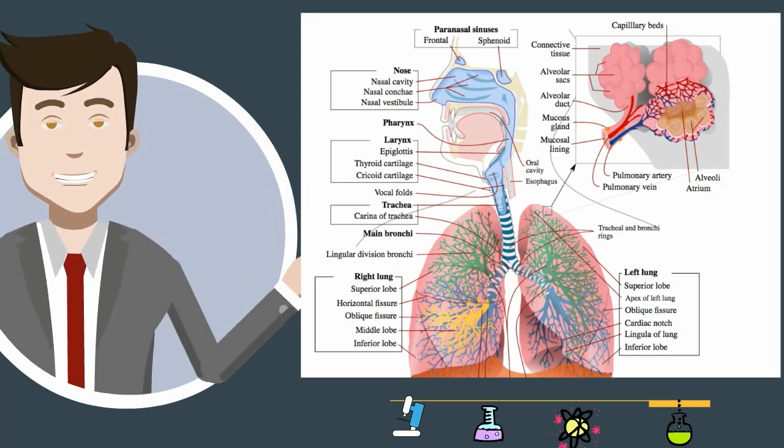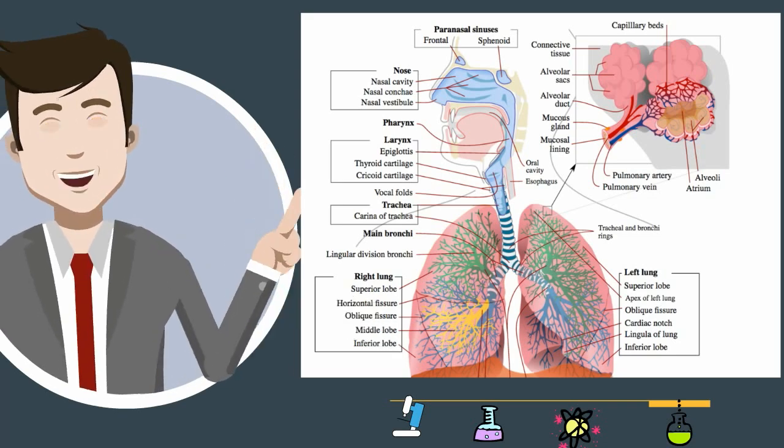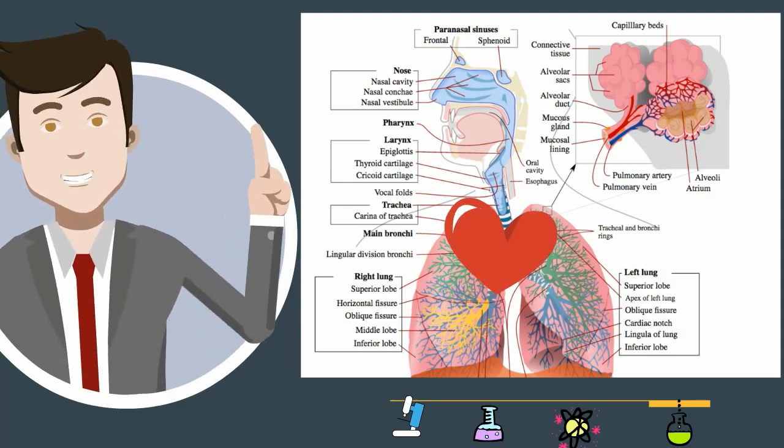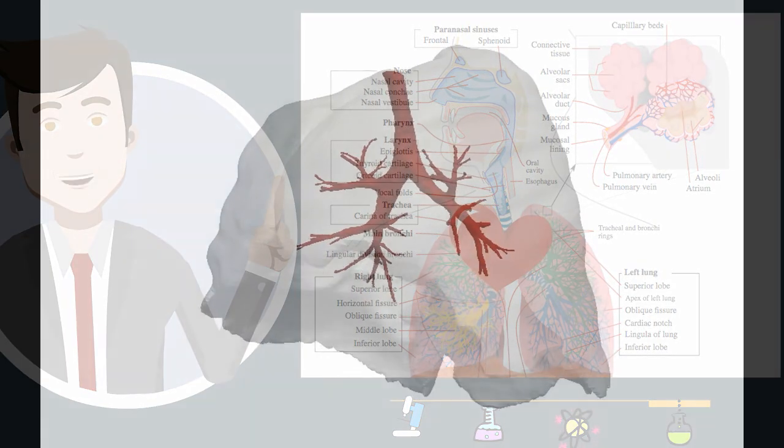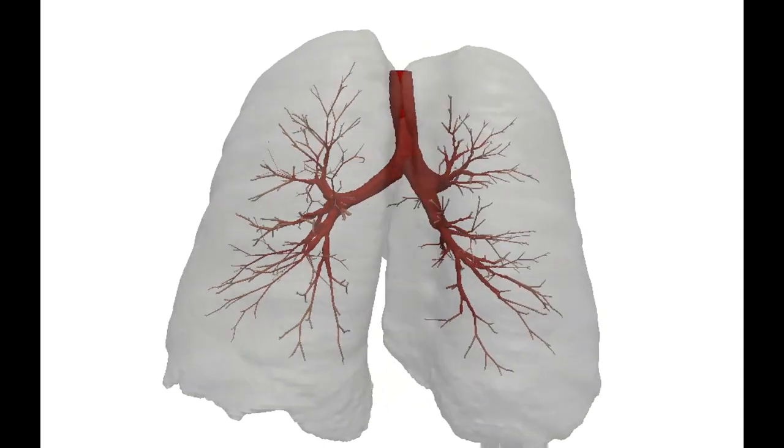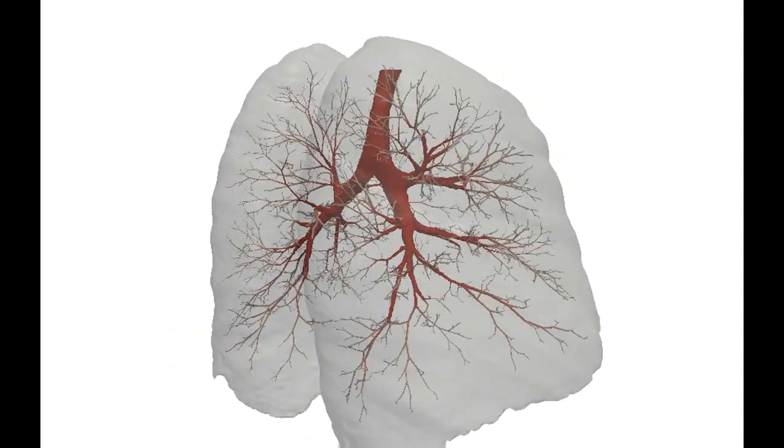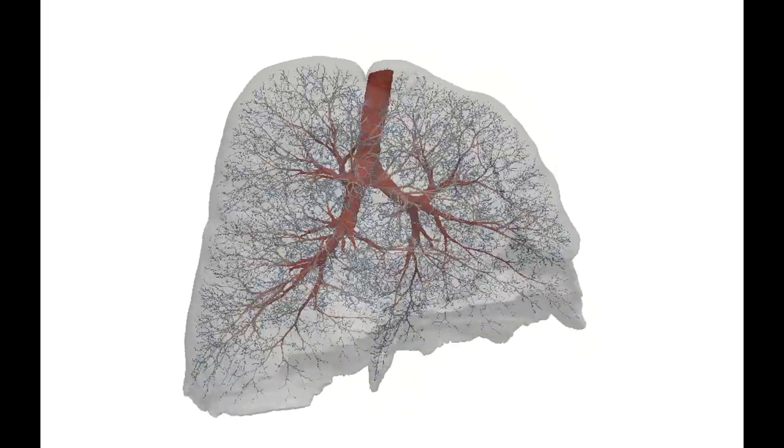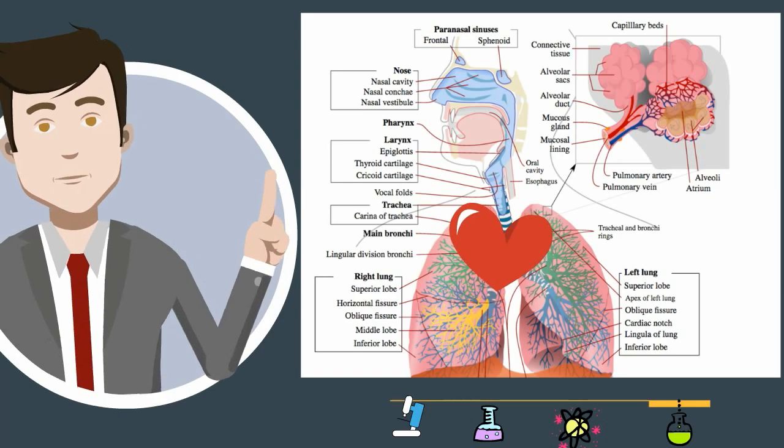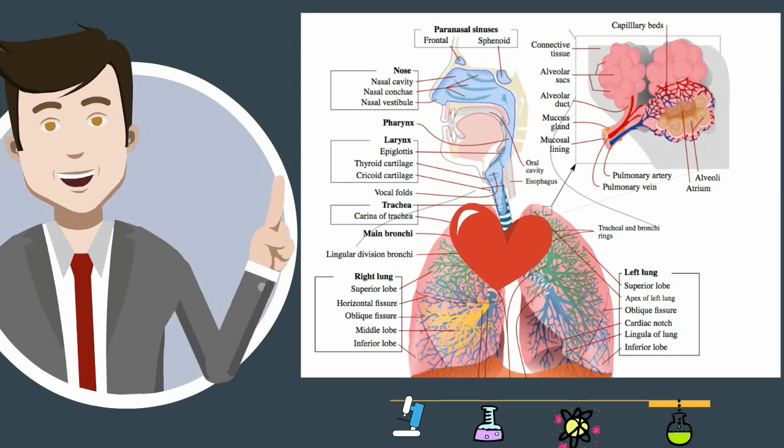The respiratory system works closely with the cardiovascular system to exchange oxygen and carbon dioxide. Take a look. The flow of blood to the lungs includes veins, arteries, and capillaries.